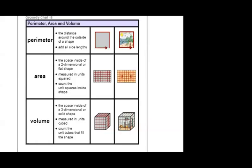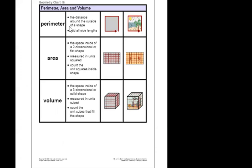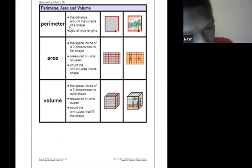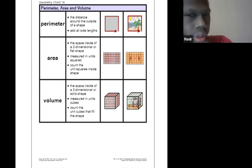Let's talk about perimeter of a shape. Perimeter is the distance around the outside of the shape. To calculate perimeter, you add up all the sides. Remember, area is the inside of the shape, but we're going to focus on the perimeter. You guys might need calculators — go ahead and get out the calculator from your box.